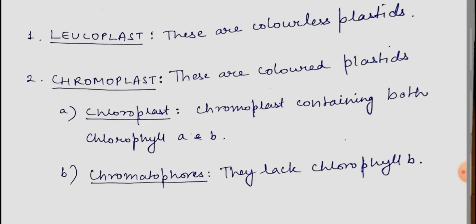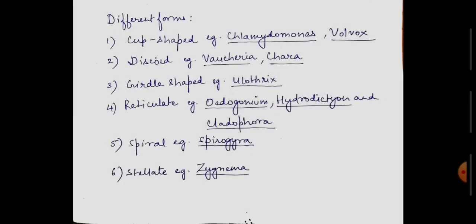These pigments are different types of chemical compounds. The main pigments found in algae are Chlorophyll, Carotenoids, and Phycobilins.